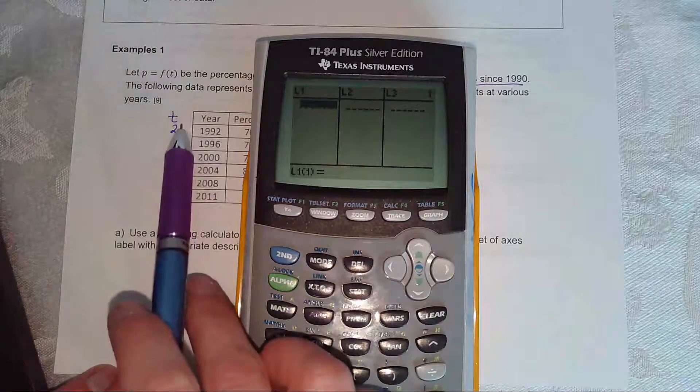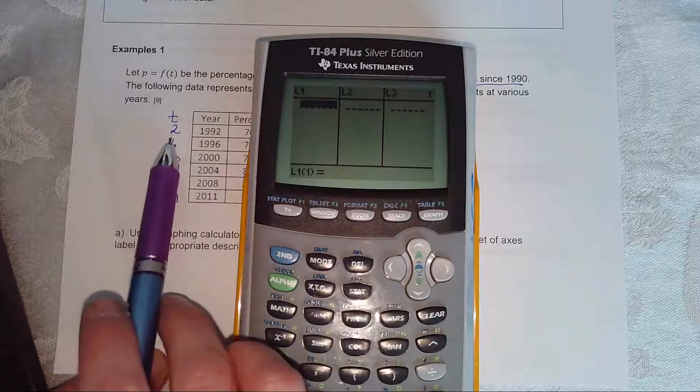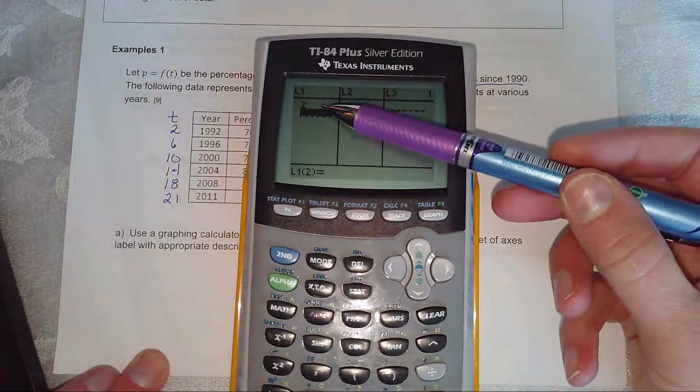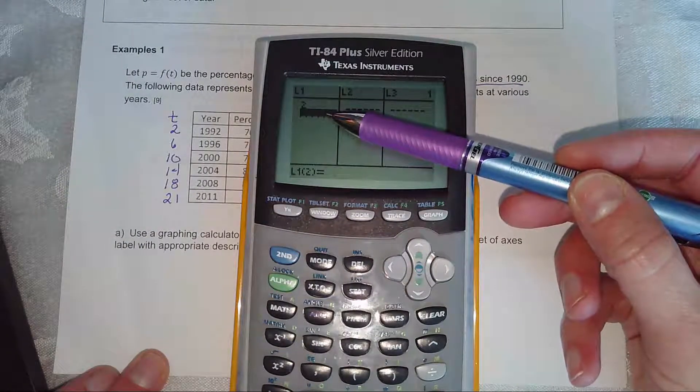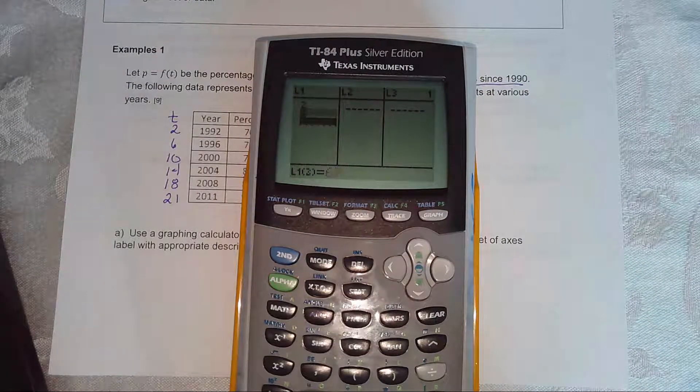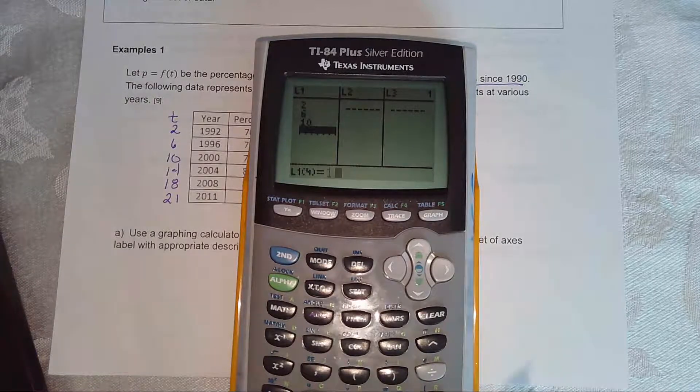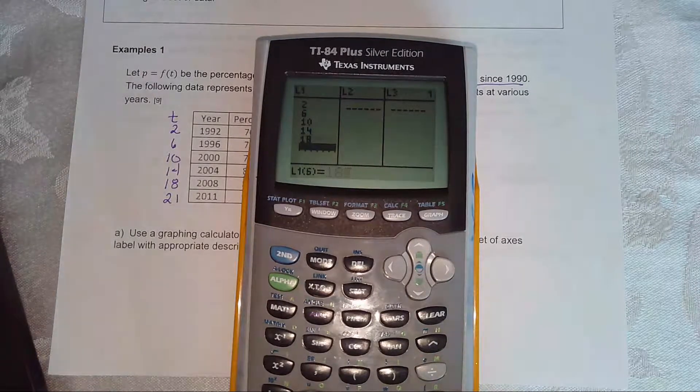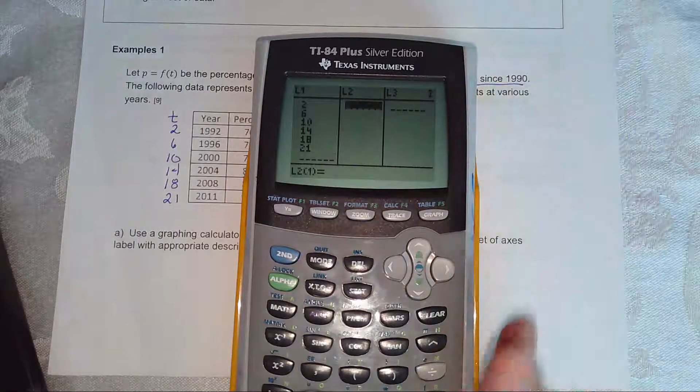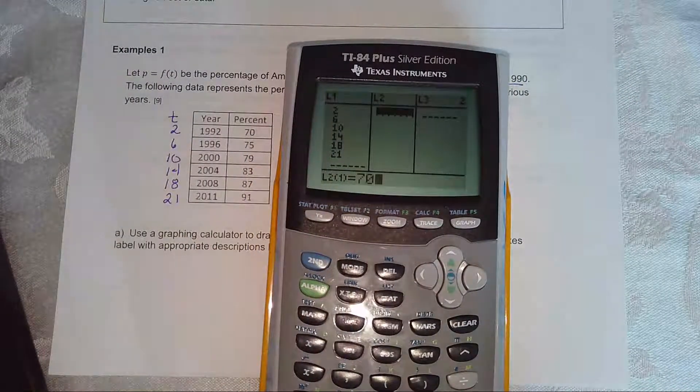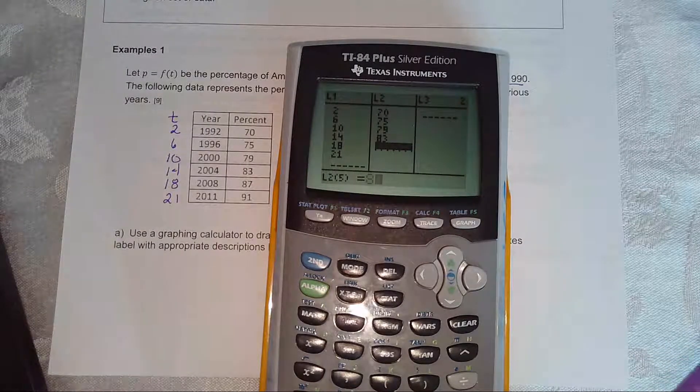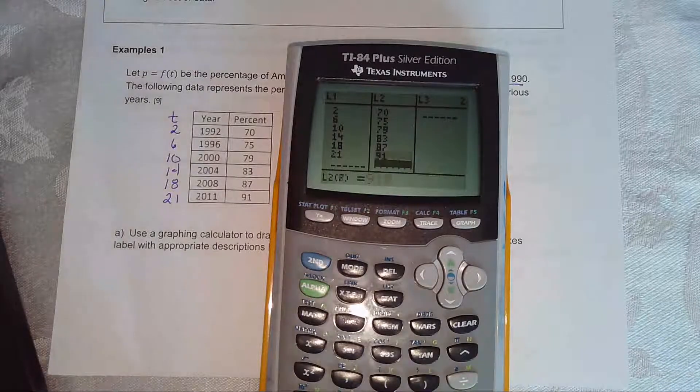So the first set of data, our inputs are going to go into L1. So just hit this first number 2 and then enter and you'll see the 2 come in the L1 and then the cursor drops below to wait for the next set of data. So I'm just going to go ahead and enter in this data and I hit enter after each entry. And that'll scroll the cursor down that list. And then I'm going to use my left arrow to pop up to L2 and I'm going to enter in these percentages of people who wore seat belts for these various years since 1990.